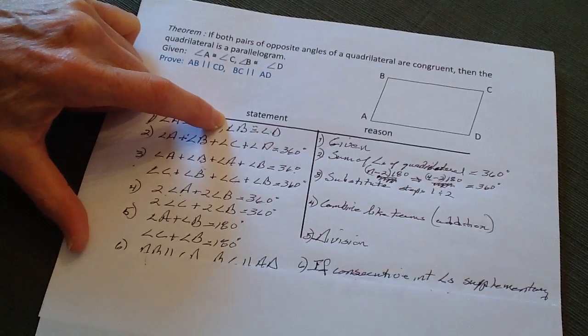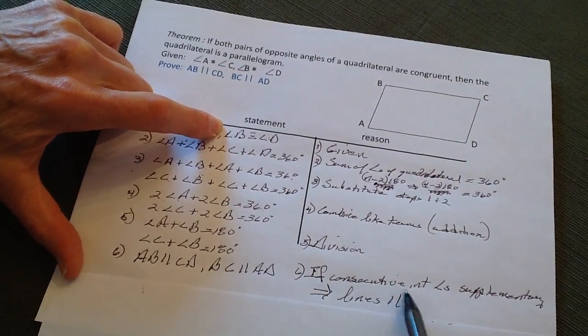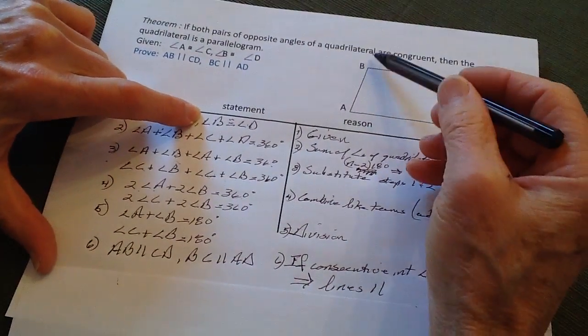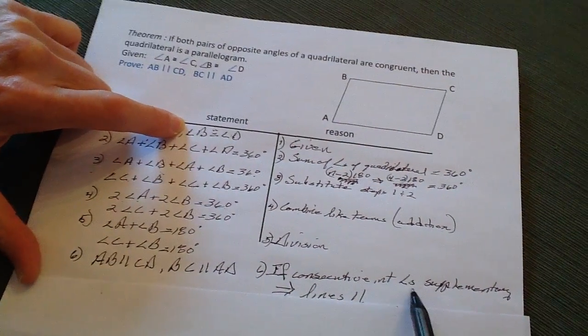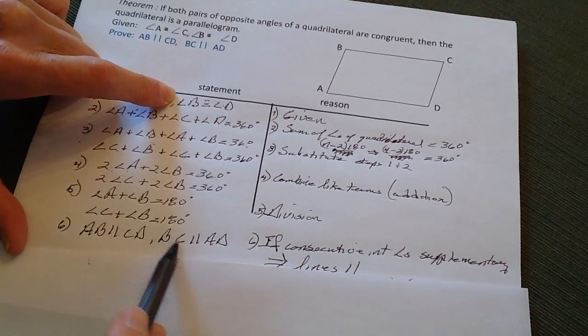which is exactly where we wanted to go, because we remember the theorem, if we have consecutive interior angles, these are consecutive interior angles, interior angles that are supplementary, in other words, they're equal to 180 degrees, then the lines are parallel.